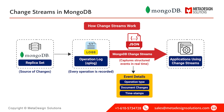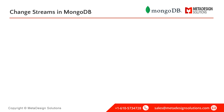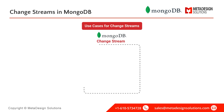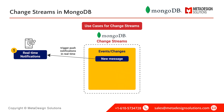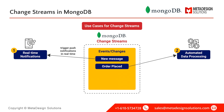Let's look at some real-world scenarios where change streams can be a game-changer. For real-time notifications, imagine a messaging app where users receive instant alerts when a new message arrives — change streams can detect new messages and trigger push notifications in real-time.